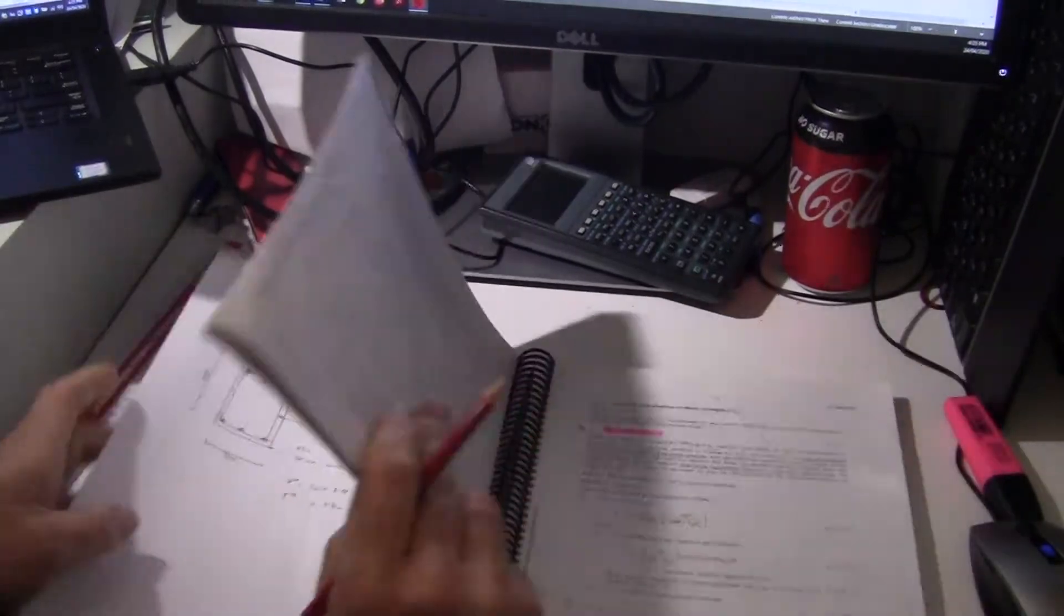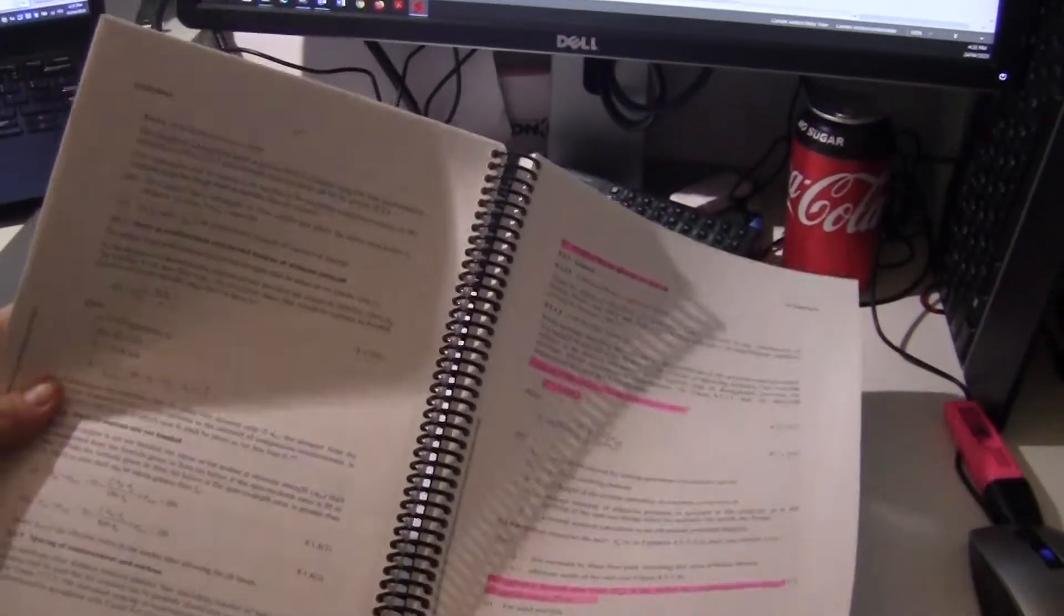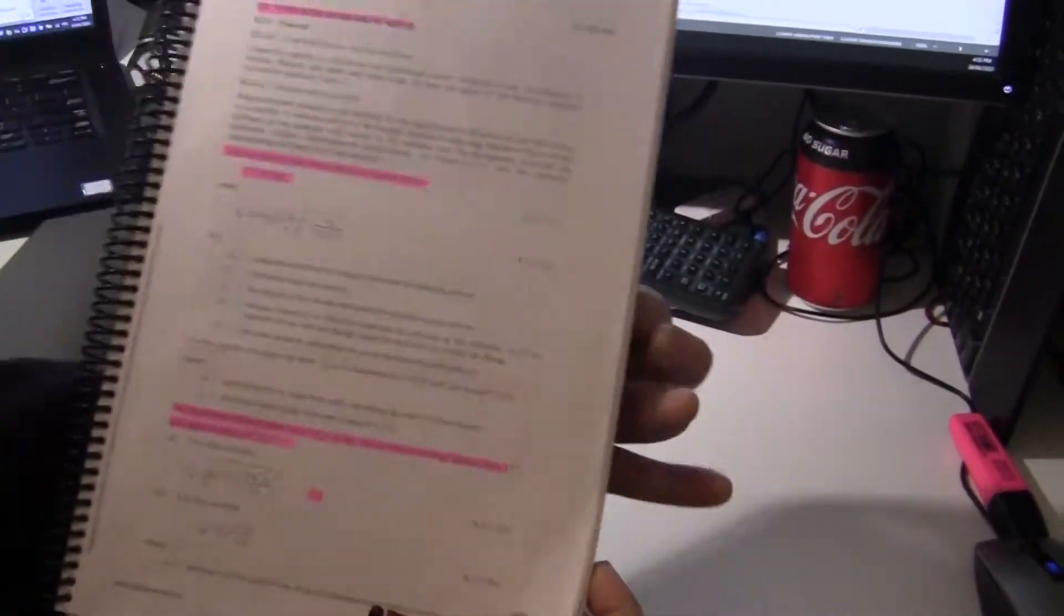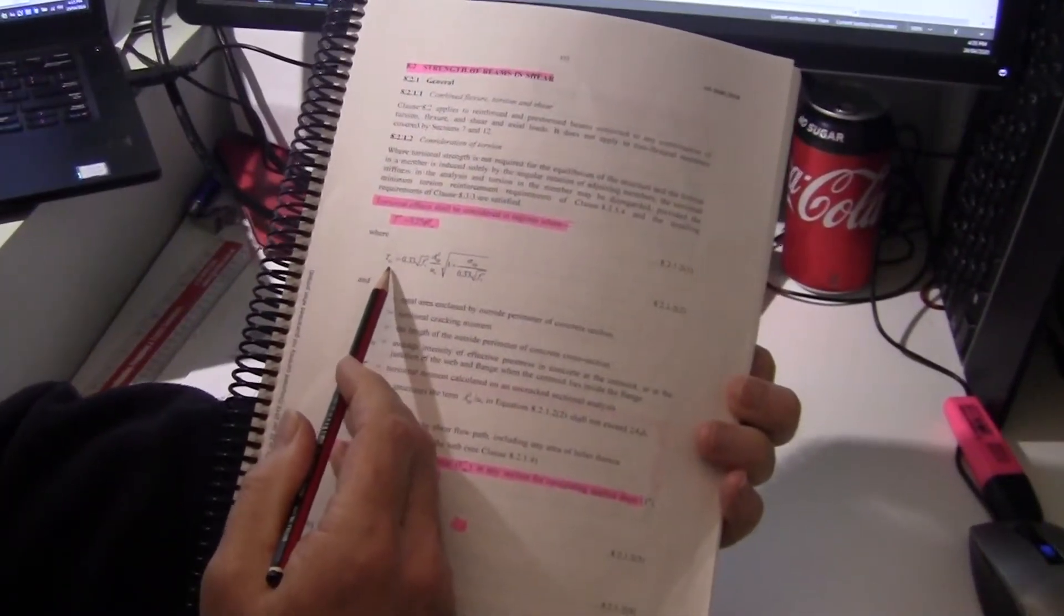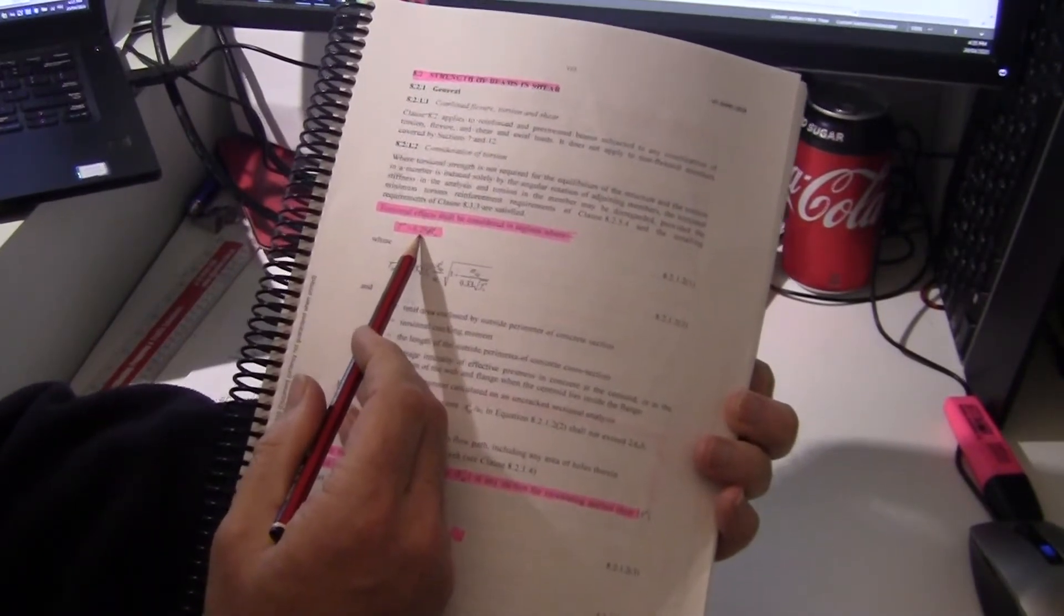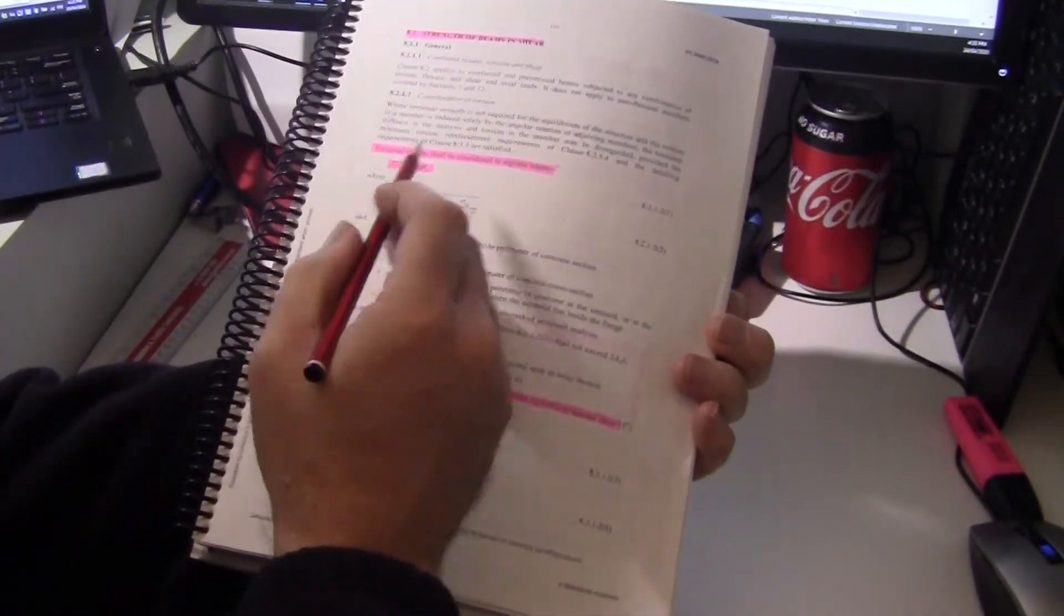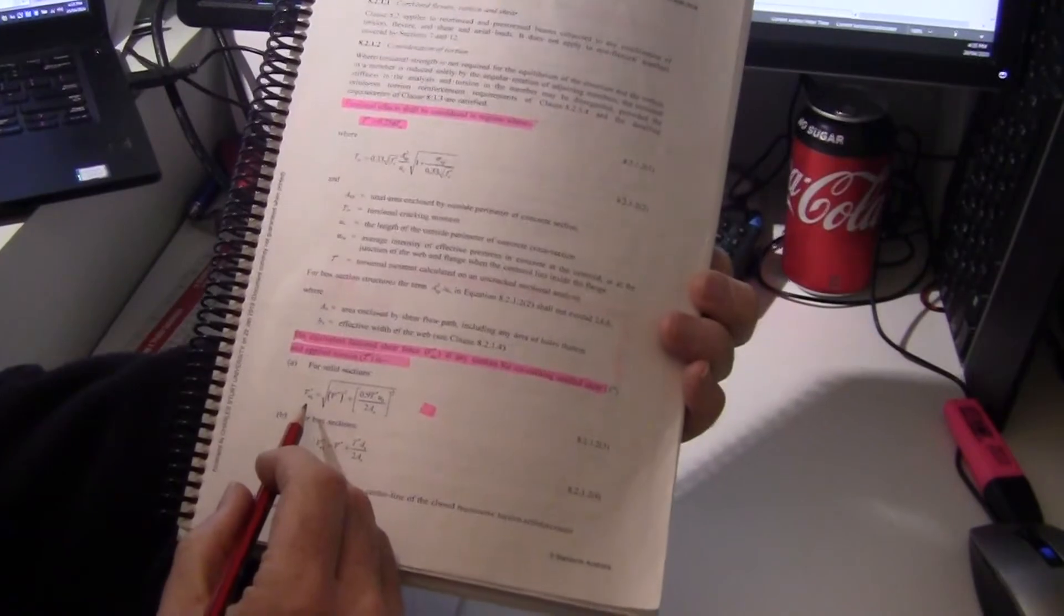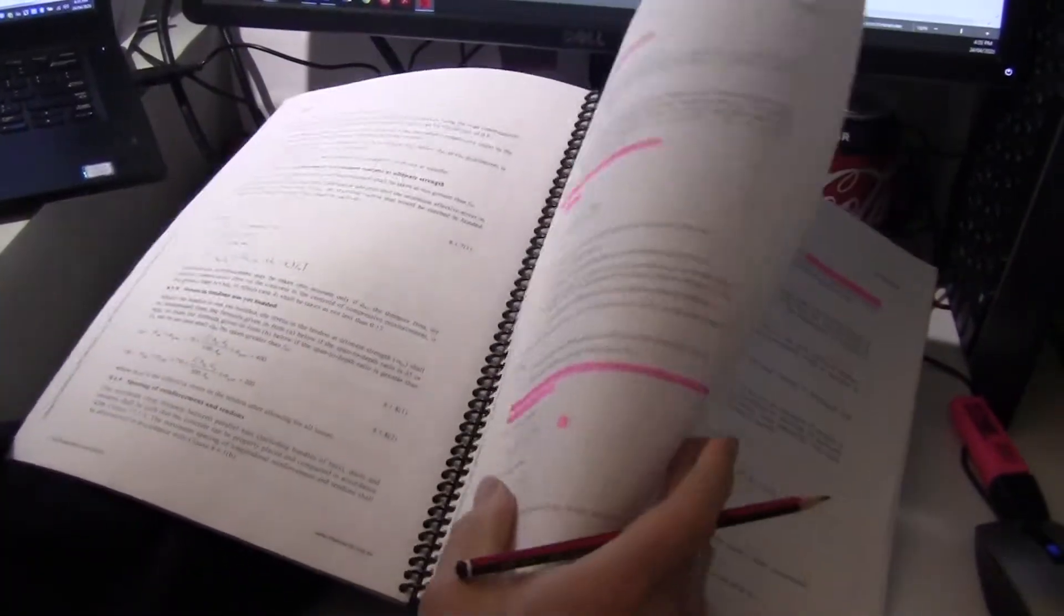So we're going to go through section 8.2 of AS3600. First we're going to work out the critical torsion and see if our load is more than a quarter of that, if we need to consider torsion or not. Then we're going to combine the torsion and the shear to get an equivalent load. That will give us the equivalent shear load.